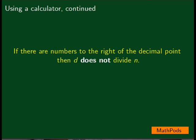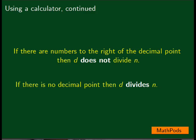If there are numbers to the right of a decimal point, then d does not divide n. On the other hand, if there is no decimal point, then d divides n.